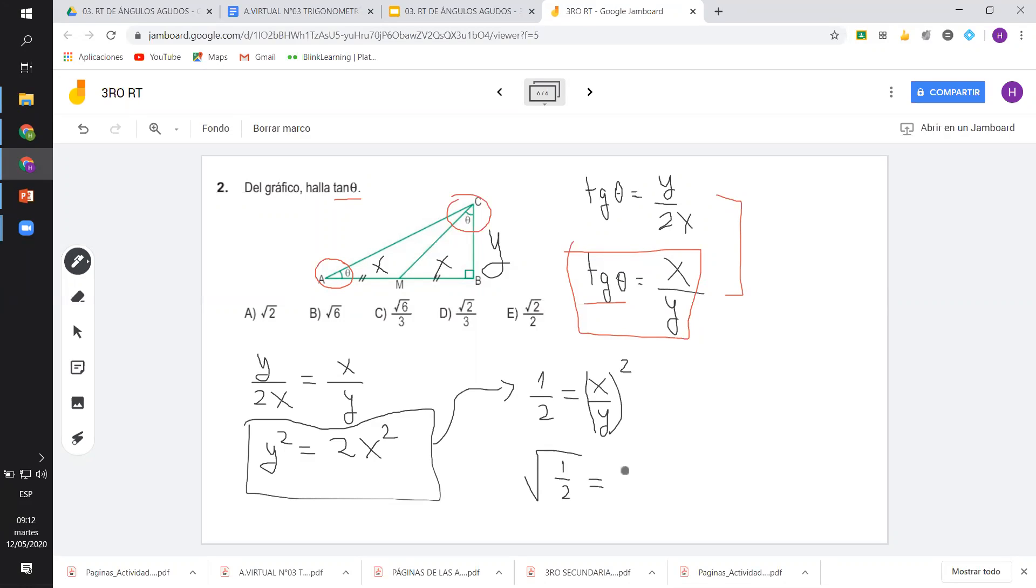El Y cuadrado pasa dividiendo. Sería 1 medio es igual a X cuadrado sobre Y cuadrado. Y el cuadrado se factoriza que sería X sobre Y todo elevado al cuadrado. Muy bien. Y la potencia pasa como raíz. Entonces, sería raíz de un medio. Y X sobre Y sería 1 sobre raíz de 2. Y el raíz de 2 se multiplica raíz de 2 sobre raíz de 2. Eso te han enseñado en álgebra, racionalización. Muy bien, Ivana.